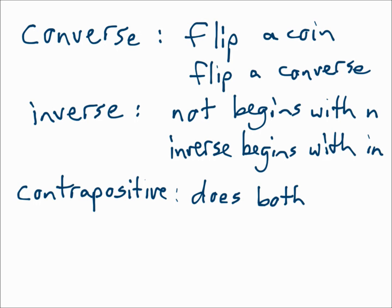The inverse puts a 'not' in each one. The word 'not' begins with 'in,' and the word 'inverse' begins with 'in' — both start with 'in.' And the contrapositive simply does both: flip it and put a 'not' in each one.